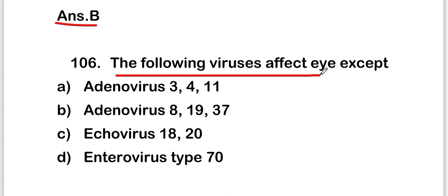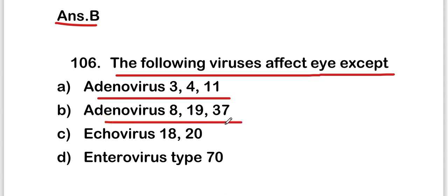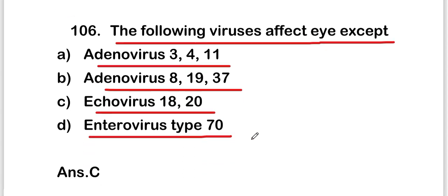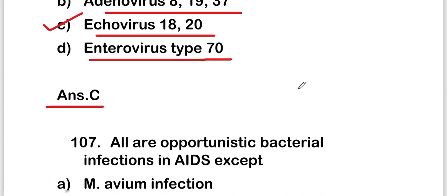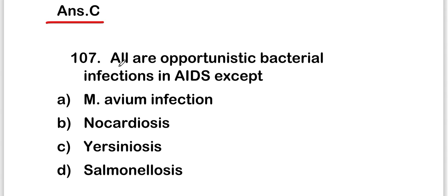The next question is: which of the following viruses affects the eye — except adenovirus 3 and 4, adenovirus 8 and 19, echovirus 18 and 20, or enterovirus type 70? The right answer is option C, that is echovirus 18 and 20. Echovirus 18 and 20 do not affect the eye.